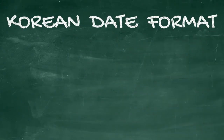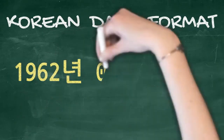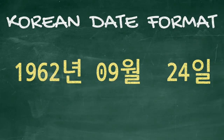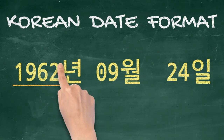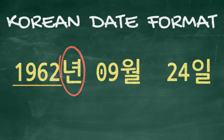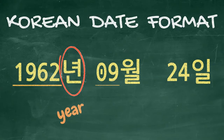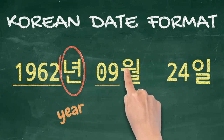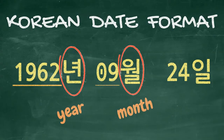Different countries have various ways of date formatting, but the way Koreans write dates is like this. They start with a year, followed by 년 (nyeon), meaning year. Next is the month, which is also expressed in numbers depending on which order it comes in a year — the first month would be one, the fifth month would be five, the fourth month would be four. This is then followed by 월 (wol), meaning month.